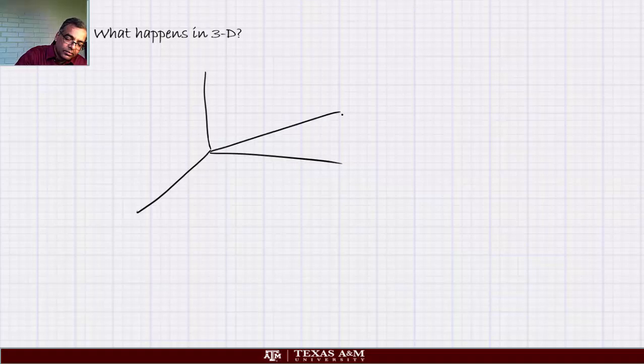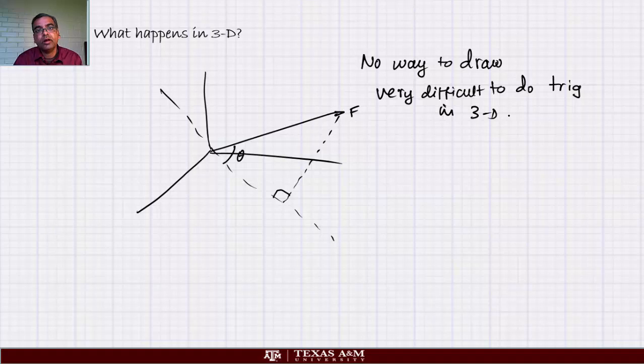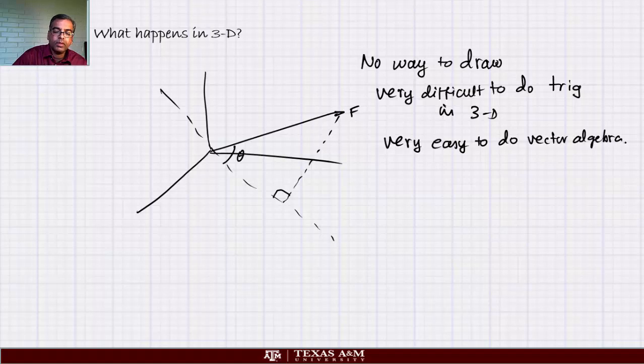Then you will see. Here is my force vector F. Here is my line vector somewhere here going like this. And then you have to drop a perpendicular and measure this angle. No way to draw. Very difficult to do trig in 3D. Can be done, but it's not for the faint-hearted. Very easy to do vector algebra.